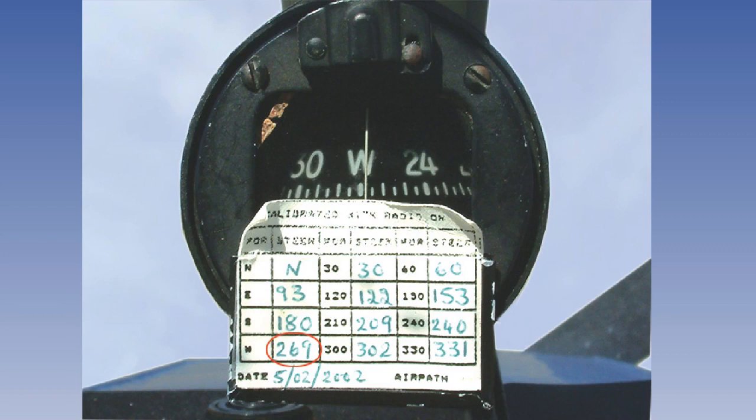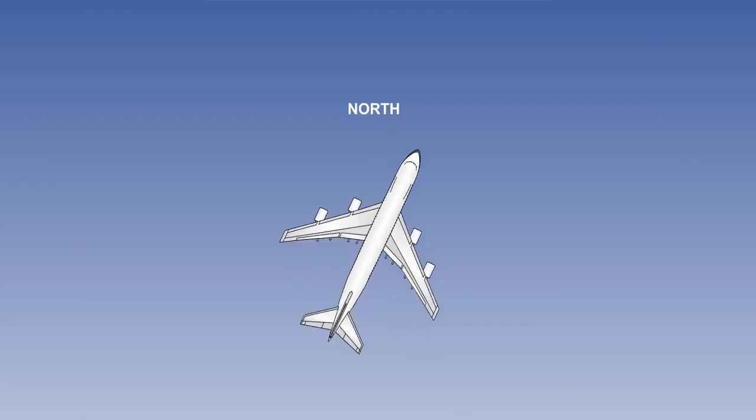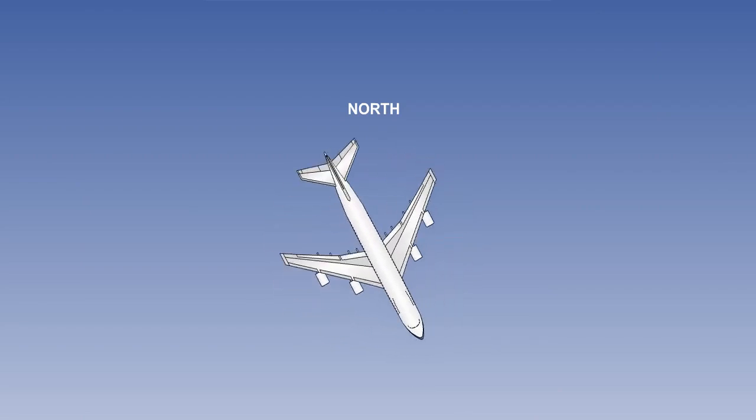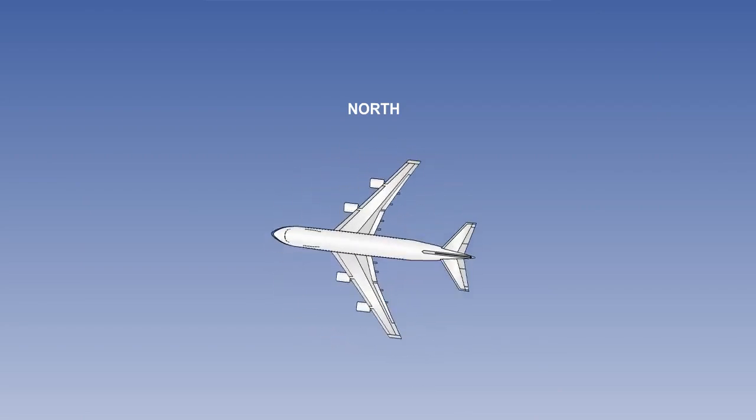To determine deviation, engineers carry out what is called a compass swing, where the actual magnetic heading is compared to the aircraft indication of magnetic heading.